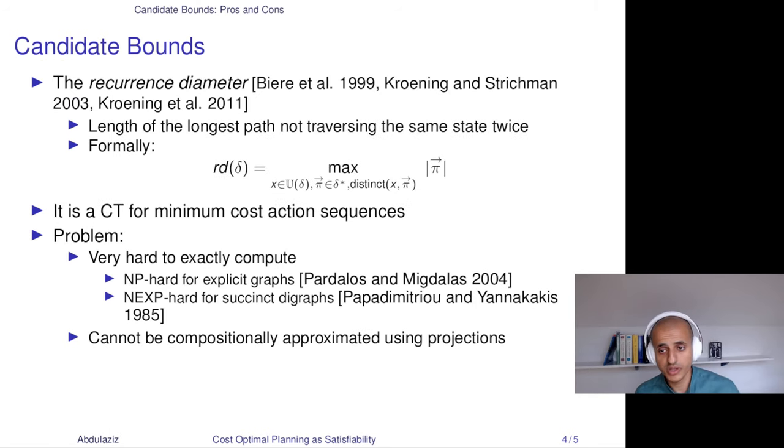The second possible topological property is the recurrence diameter. This has been extensively studied as a completeness threshold in the area of model checking, started with the work of Amin Biere. It is, in particular, a completeness threshold for model checking problems of liveness properties. It's formally defined like that. It is basically the length of the longest path that doesn't traverse the same state twice. So here, you just have a maximum, and for every state you take an action sequence, and that action sequence shouldn't traverse the same state twice.